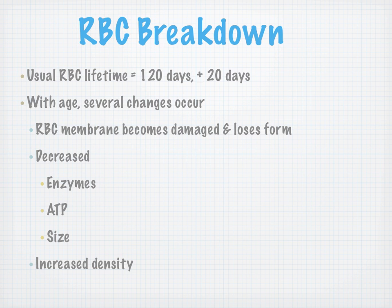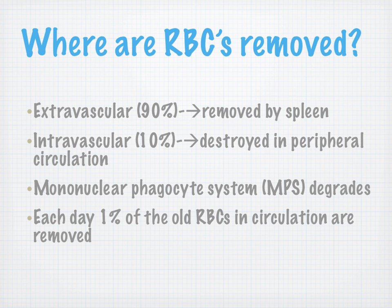Red blood cell breakdown: red blood cells usually live about 120 days, plus or minus 20 days. With age, these red blood cells have several changes — the membrane starts to lose form and gets damaged, there's a decrease in enzymes, ATP, and size, and an increase in density. At that point, it's time to remove the red blood cells. The spleen removes 90% of extravascular red blood cells; the other 10%, intravascular, are destroyed in peripheral circulation. The mononuclear phagocyte system (MPS) degrades the red blood cells, and each day 1% of old red blood cells in circulation are removed.